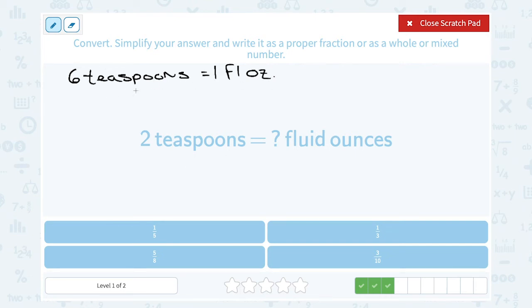That means if we know how many teaspoons we have, we have to take the number of teaspoons and divide it by 6, or put it over 6, to figure out how many fluid ounces we have. So if we have 2 teaspoons, 2 teaspoons divided by 6 would give us our answer in fluid ounces. Now I can reduce this fraction because 2 goes into both 2 and 6.